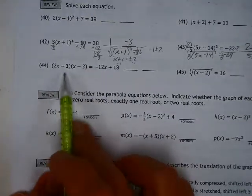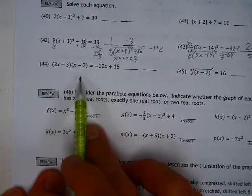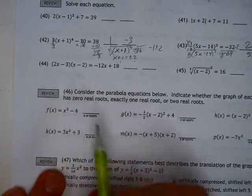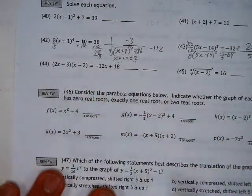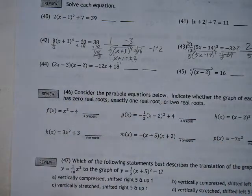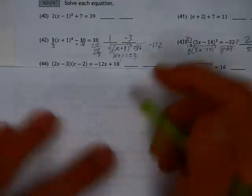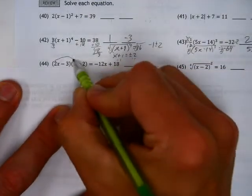This one requires a little bit of effort. It's not something we've seen too many times. But we're going to have to FOIL this side and then move this stuff over. It'll be a quadratic equation on that side of the equal sign. And so if we have some room to maneuver here, I'm going to FOIL this thing out.